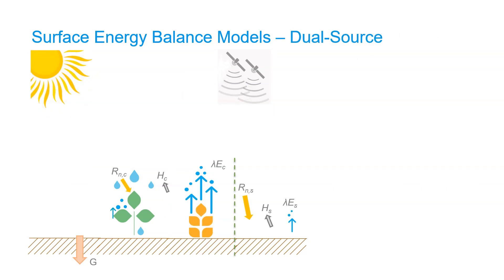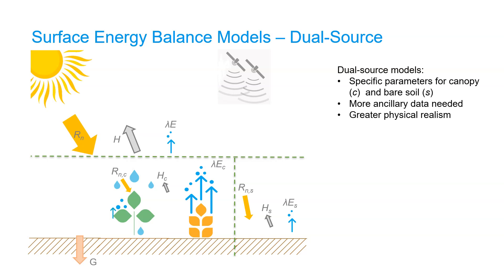Dual source models however parameterize the fluxes separately for the canopy and for bare soil. The two sources are then aggregated to derive the fluxes for the whole pixel. So dual source models have specific parameters for canopy and bare soil, and therefore they need more ancillary data than single source models. However they can have a better physical realism.